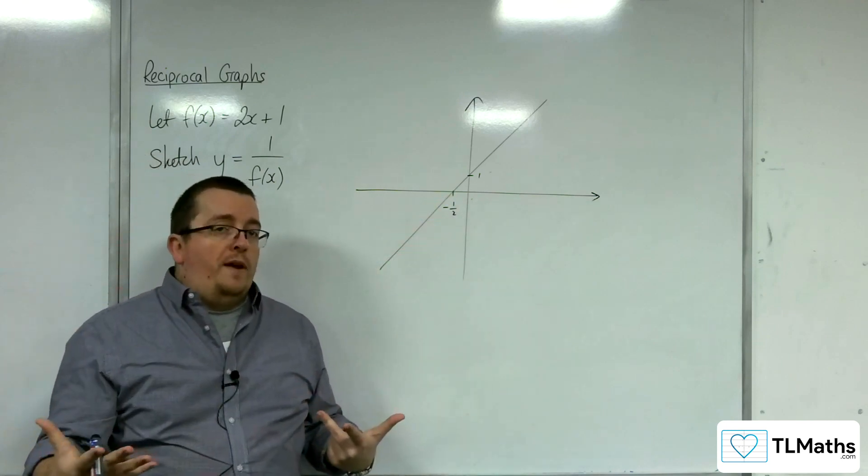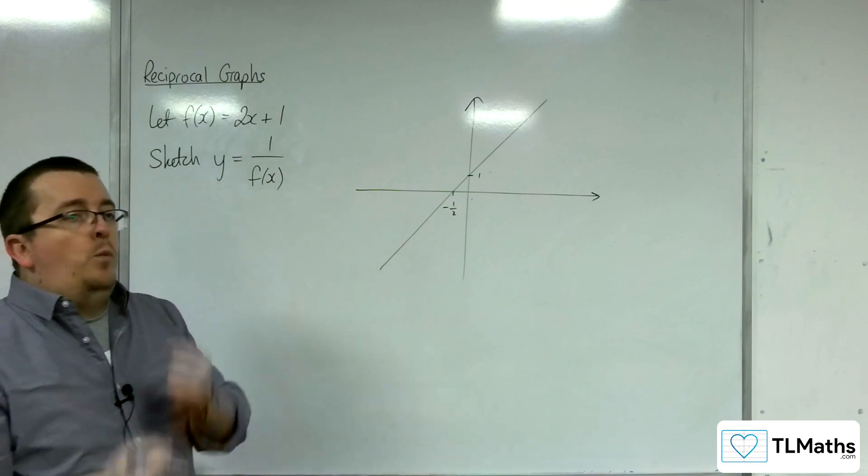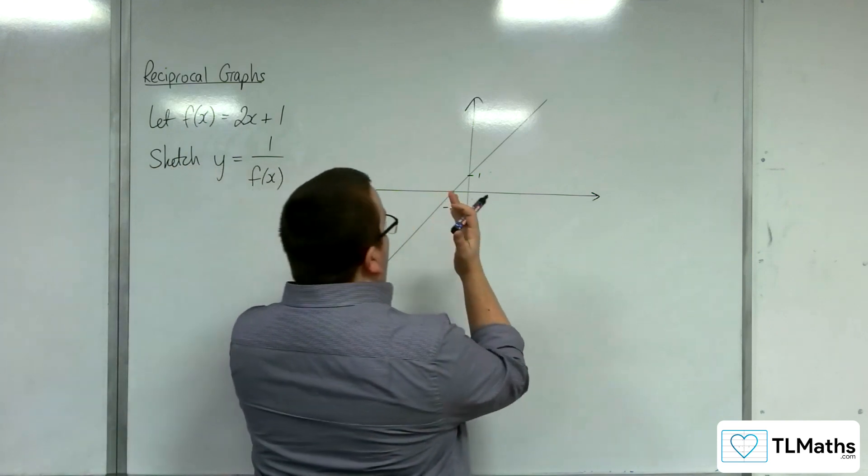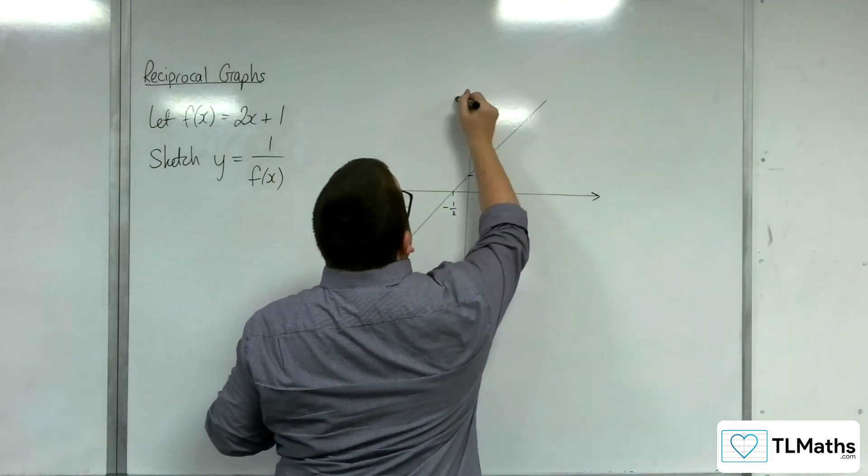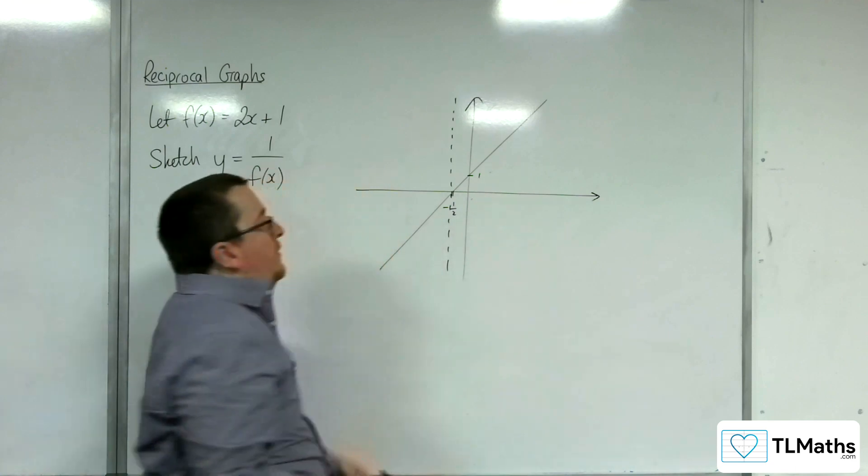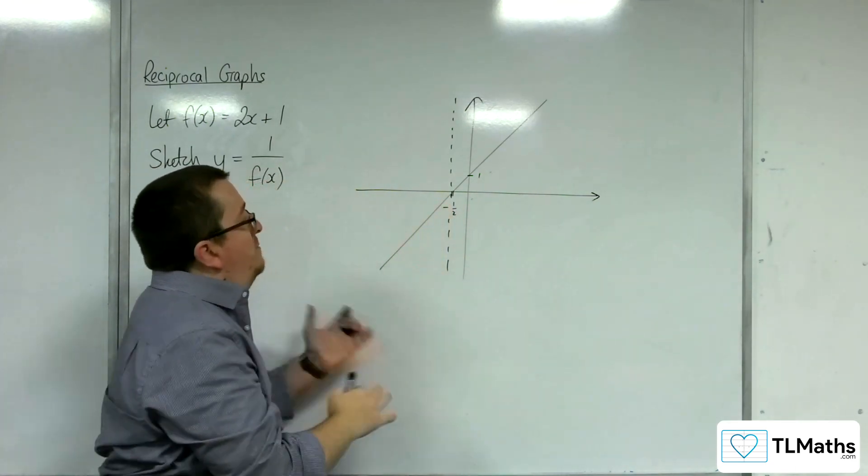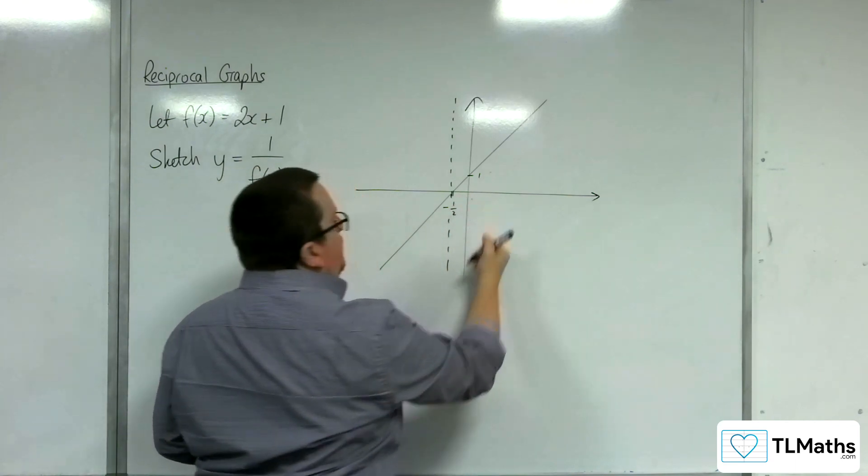If you've got 1 over f(x), then at that point you've got 1 over 0. So any point where your function crosses the x-axis, you would have to have a vertical asymptote. So we know that 1 over f(x) will have a vertical asymptote at x equals minus 1 half.